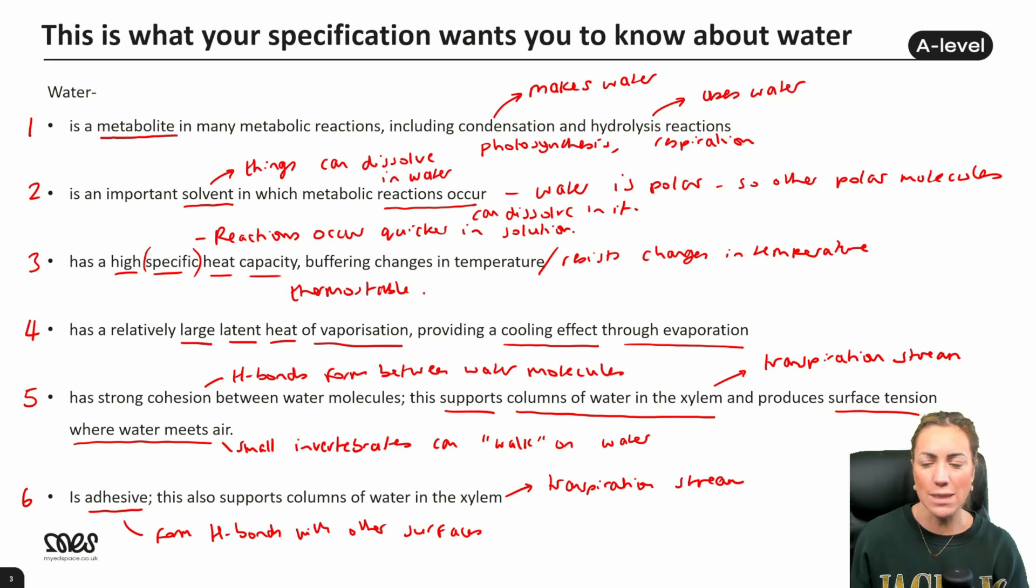So we've got six properties here: metabolite, solvent, high heat capacity, large latent heat of vaporization, cohesion and adhesion. Make sure you can list them, understand them and give an advantage of each of those properties.